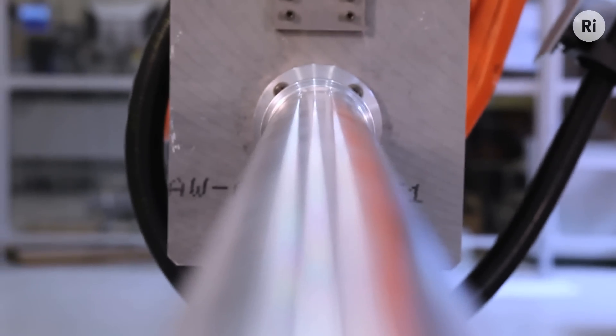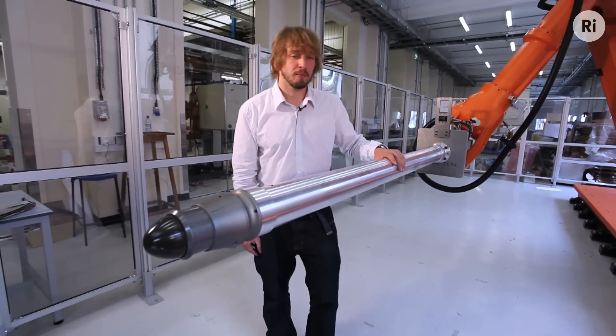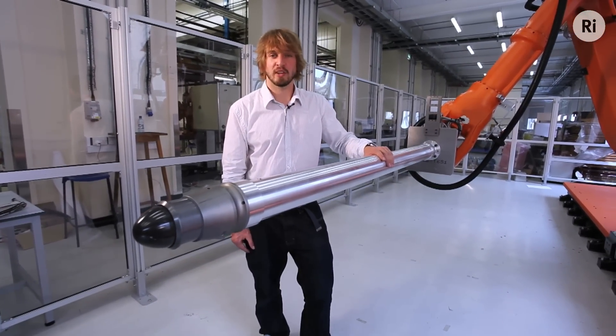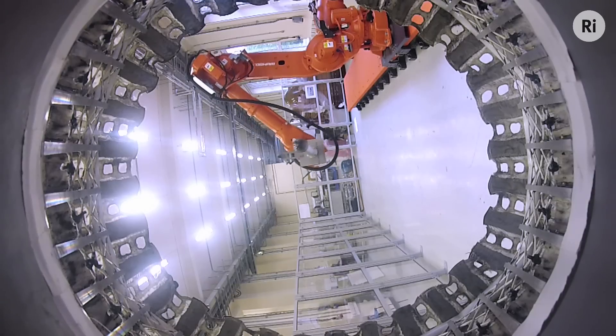So this is the refuelling probe. It's mounted rigidly to the receiver aircraft. The pilot has to manoeuvre this probe into the reception coupling on the drogue assembly. And that's when the magic happens.